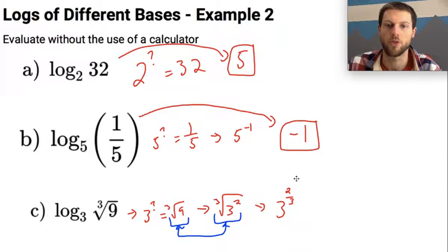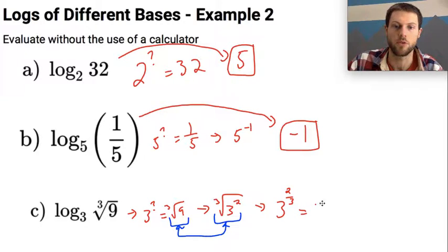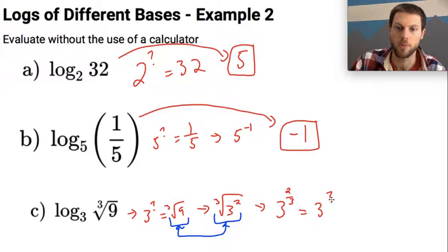And then this number is being squared, so 3 to the 2 thirds is exactly the same thing as the cube root of 3 squared. And remember, this is equal to 3 to some power. This is what I'm trying to figure out. This exponent is going to get me whatever this is.